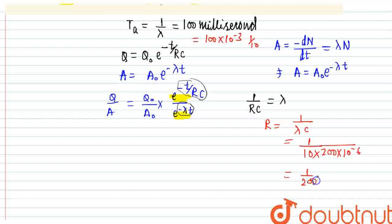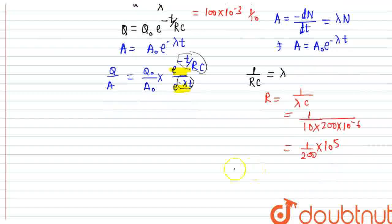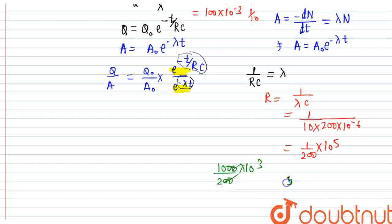So it is 1 divided by 200 times 10 to the power minus 6. And we will write the zero as well. So it is 1000 divided by 200 times 10 to the power minus 3. How much is it? 5 times 10 to the power 3 ohms. So how much is it? 5000 ohms. This is my answer. Thank you.